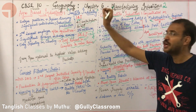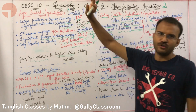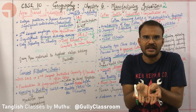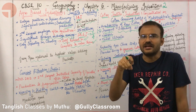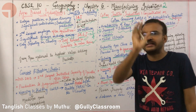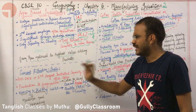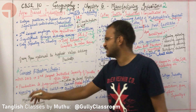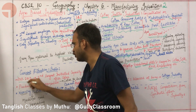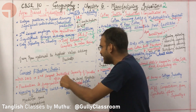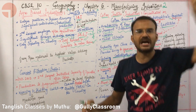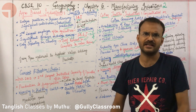The textile industry holds a unique position in the Indian economy. The cotton textile industry is critical, concentrated in Maharashtra and Gujarat. Looking at the current situation: in 2011–2012, India had the second largest installed capacity of spindles in the world, after China.